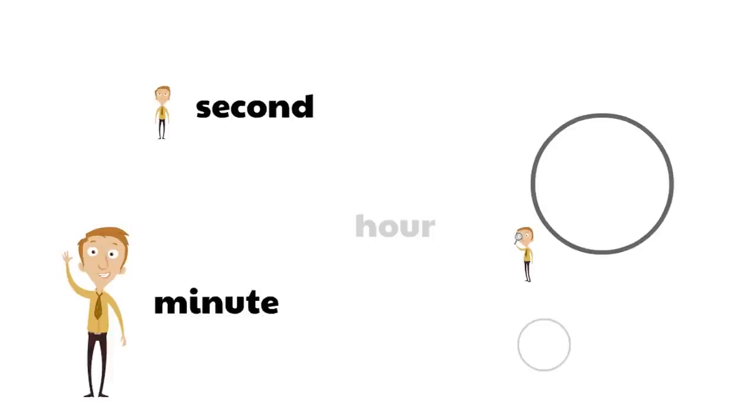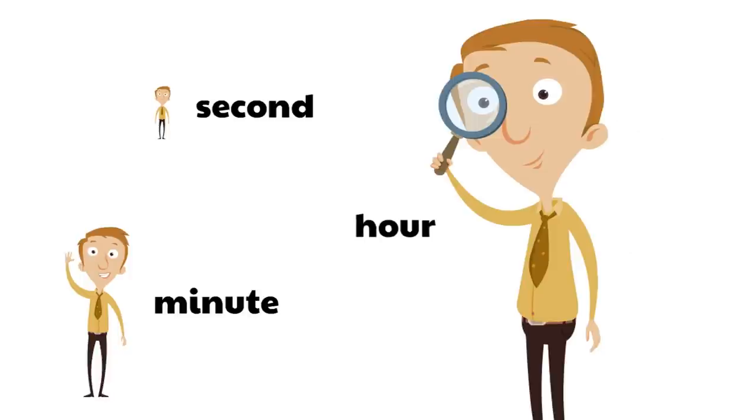A second is the smallest unit of time. It's so tiny. A minute is a lot bigger than a second. And then an hour is even bigger. An hour is the biggest unit of time in a day.